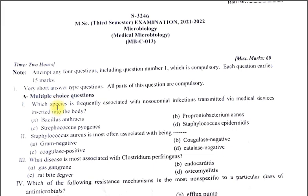The first MCQ is: which species is frequently associated with nosocomial infections transmitted via medical devices inserted into the body? A. Bacillus anthracis. B. Propionibacterium acnes. C. Streptococcus pyogenes. D. Staphylococcus epidermidis. The correct option is D, Staphylococcus epidermidis. This also forms the normal microflora of the human skin.